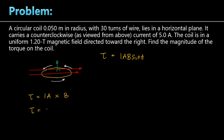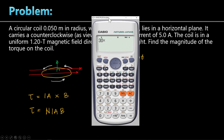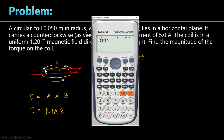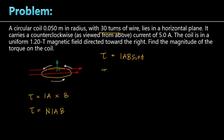The torque magnitude is IaB. For 30 turns, multiply by N: tau equals N times I times A times B. In the calculator: 30 turns times 5 amperes times pi times (0.05 squared) times 1.2 Tesla. The answer is 9 pi over 20, approximately 1.4 newton meters.